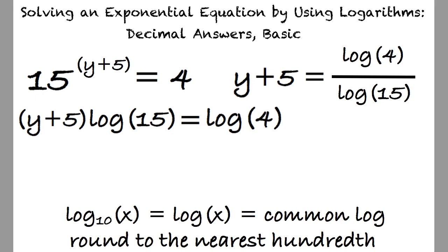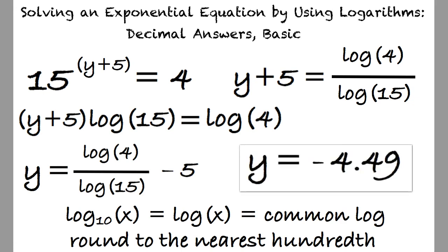Lastly, we subtract 5 from both sides and input this equation into the graphing calculator to result in -4.49 after rounding to the nearest hundredth.